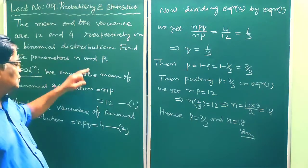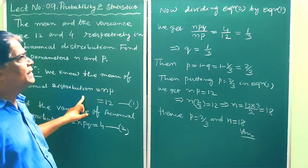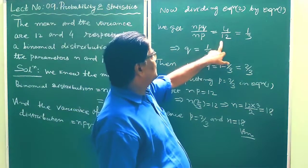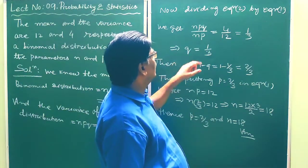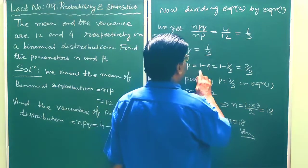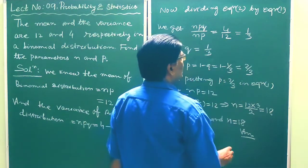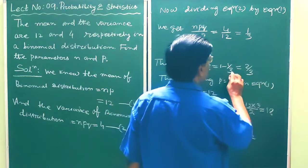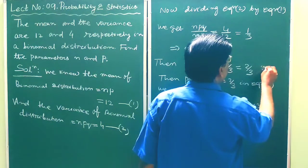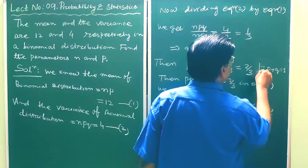Dividing equation 2 by equation 1, npq by np is equal to 4 by 12, which is 1 by 3. So q is equal to 1 by 3. Then p is equal to 1 minus q, equal to 1 minus 1 by 3, equal to 2 by 3, because p plus q is equal to 1.